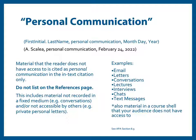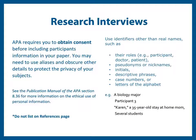Use the relevant citation format depending on how the source was made available. When conducting interviews for your own research, either as part of an assignment or a larger project, APA requires you to obtain consent before including participants' information in your paper. You may need to use aliases such as 'Participant 2' or 'a Biology major' and obscure other details to protect the privacy of your subjects. See the Publication Manual of the APA, Section 8.36, for more information on the ethical use of personal information.